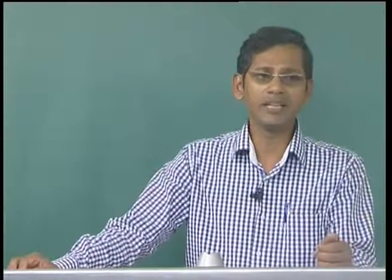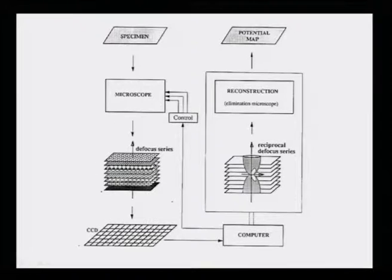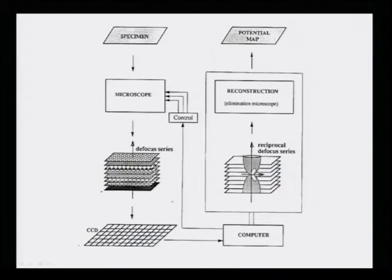This can be done using a technique called the multi-slice method. In this method, the specimen is sliced into many slices taken normal to the electron beam, and then we can simulate the dynamical interaction of the electron with the material using different methods.